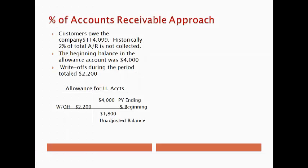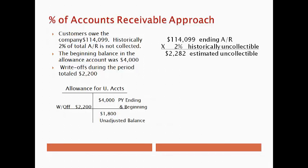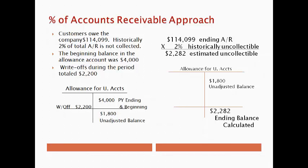Let's take a look at an example using the percent of total accounts receivable approach. Customers owe the company $114,099. Historically, 2% of total accounts receivable is not collected. The beginning balance in the allowance account was $4,000 and write-offs during the period totaled $2,200. The T-account for the allowance account begins with the beginning balance, which is also the prior year ending balance. Write-offs during the year decrease the account, leaving an unadjusted balance of $1,800 at the end of the period when the adjusting entry for bad debt expense must be made. The first step is to multiply the ending accounts receivable balance by the percent of accounts receivable not historically collected. This gives the total amount of accounts receivable not expected to be collected, which is also the ending balance in the allowance account. The difference in the unadjusted balance — the amount left over from prior estimates — and the current estimate is the bad debt expense for this period.